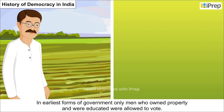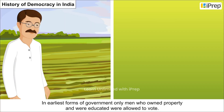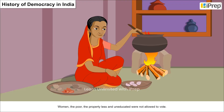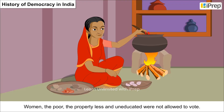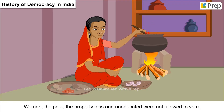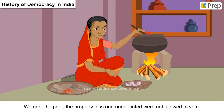In the earliest forms of government, only men who owned property and were educated were allowed to vote. Women, the poor, the propertyless, and the uneducated were not allowed to vote.